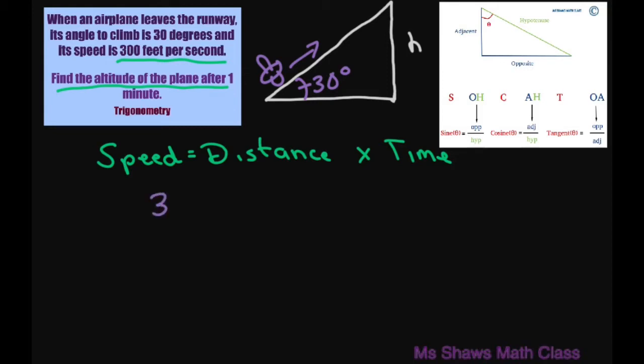So that's going to be 300 feet times 60 seconds, and that's going to equal 18,000 feet per minute. So I'm changing that to minutes.